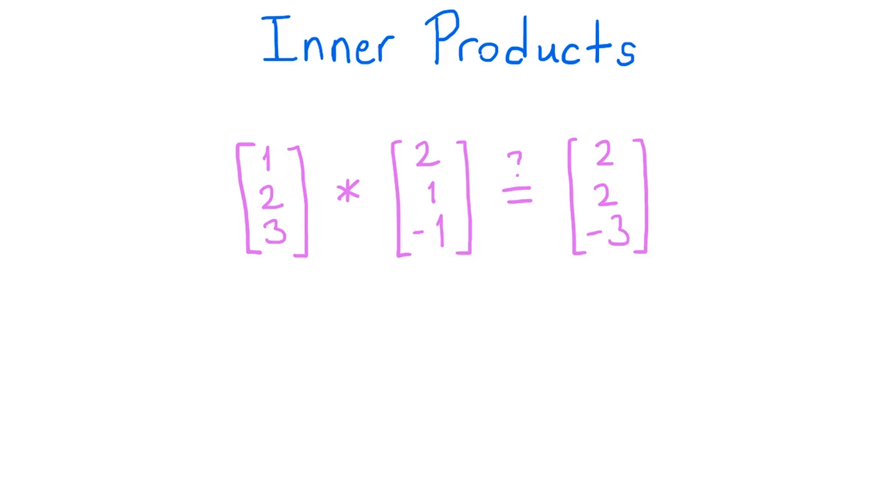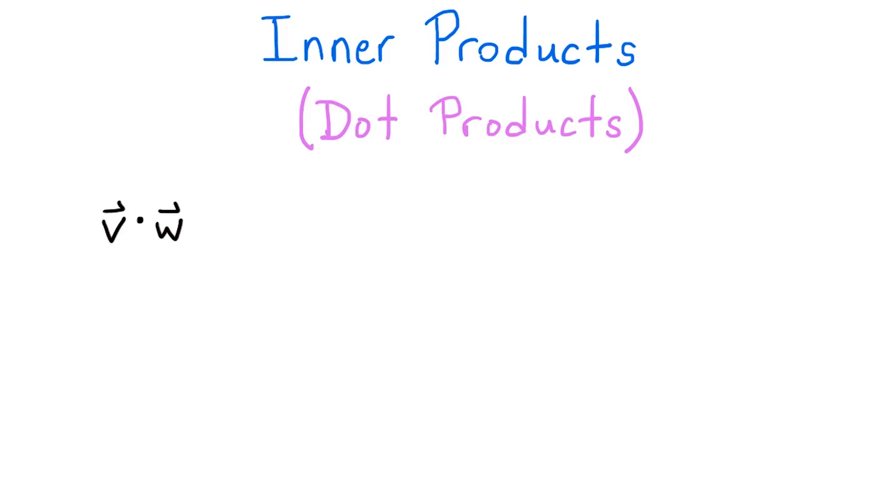However, there are other notions of multiplication which are very useful. One of the most important operations we can perform on vectors is the inner product, also called the dot product, since we often represent it by placing a dot between the vectors being multiplied.